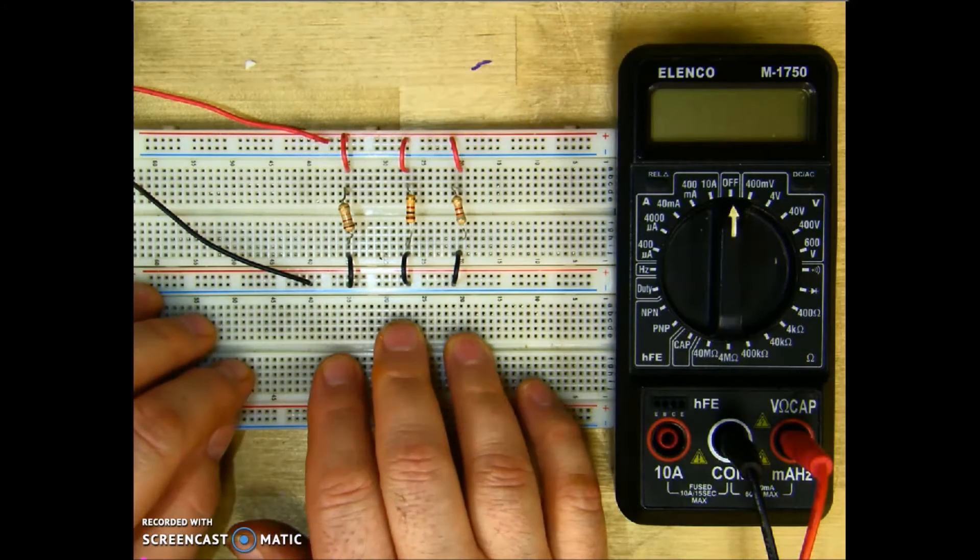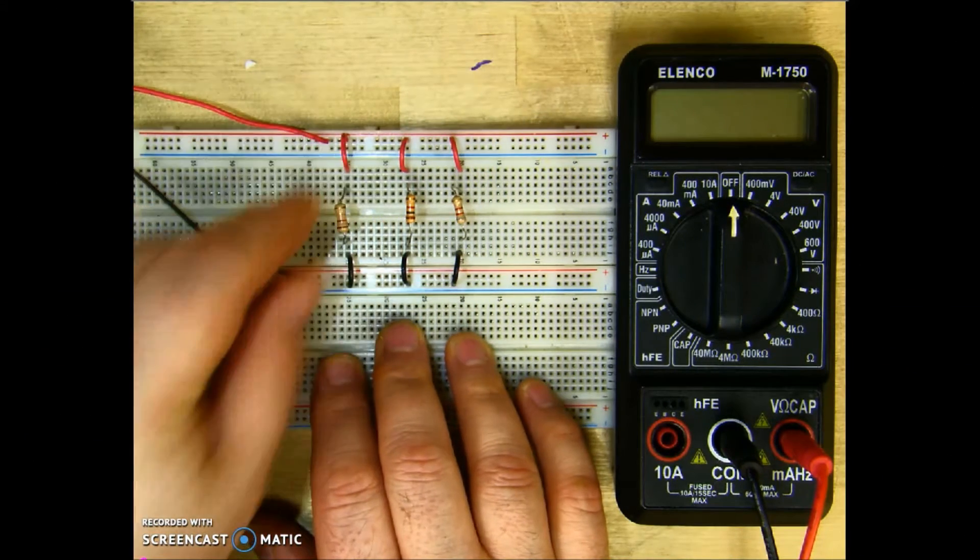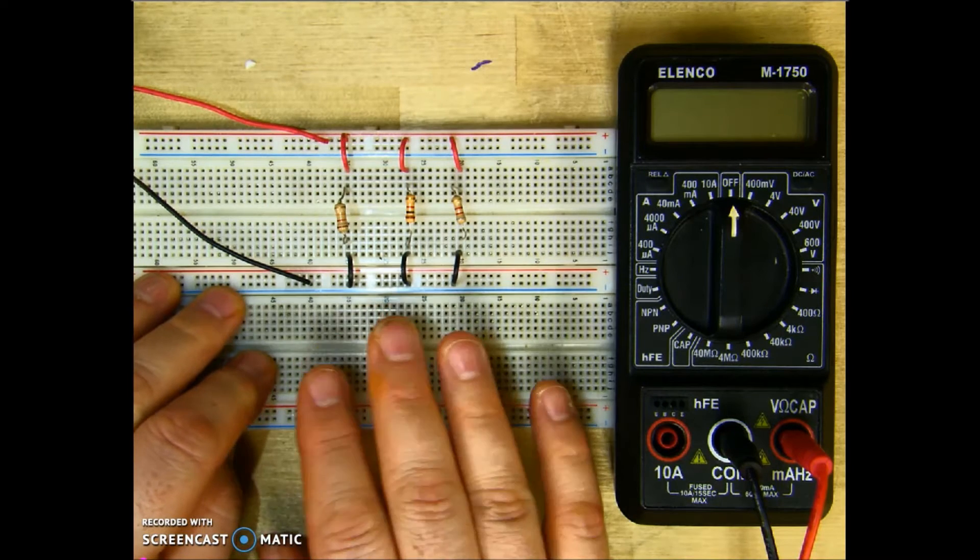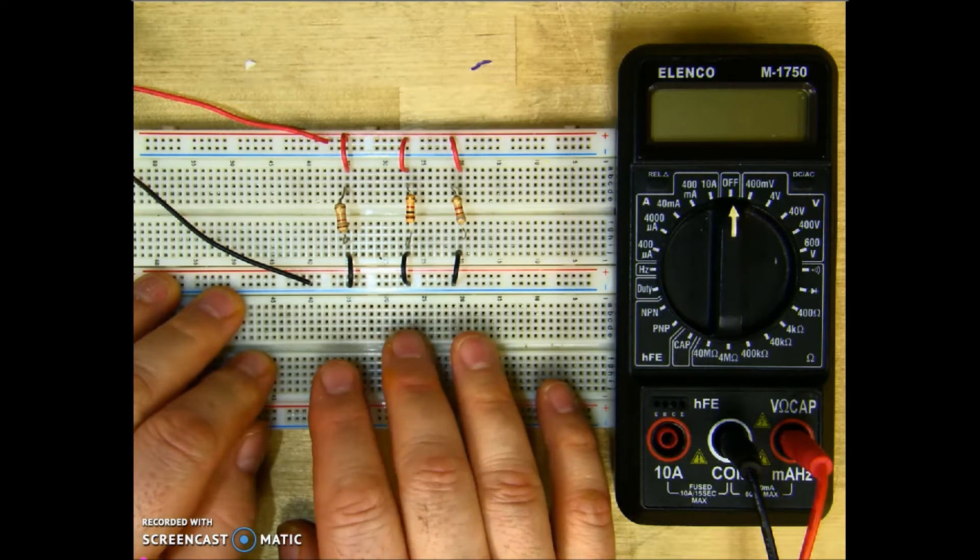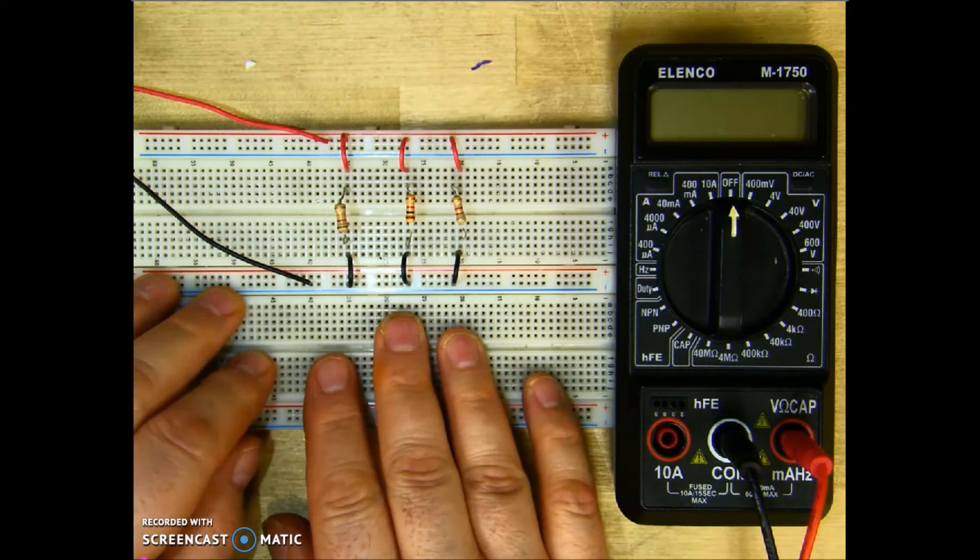I have here a simple three resistor parallel circuit and today what we're going to do is show you how to take your resistance, voltage, and current readings for this type of circuit.